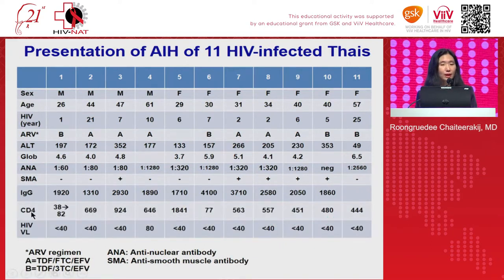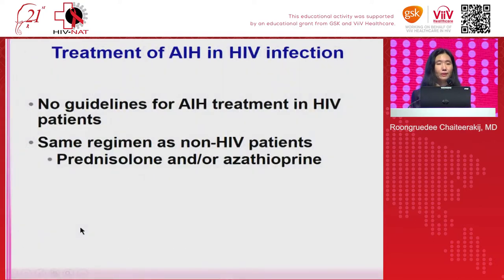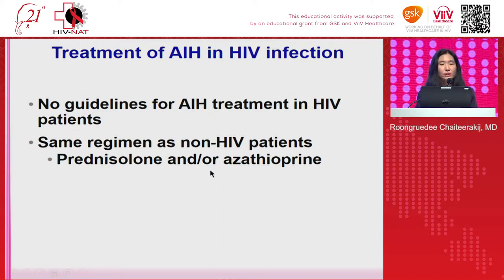Looking at CD4 count at the time of AIH diagnosis, most patients had a very good CD4 count — just two patients had CD4 less than 100. Similarly, most of them had undetectable viral load at the time of AIH diagnosis. For treatment of AIH in HIV infection, there are currently no guidelines. We recommend using the same regimens as non-HIV patients — immunosuppressive drugs: prednisolone in combination with azathioprine.